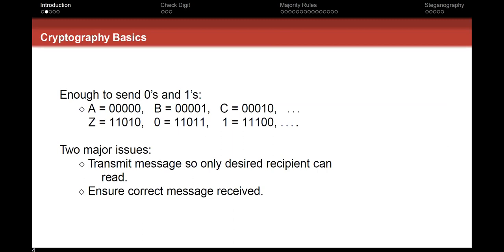Just a couple of basics in coding theory. Imagine we're using five bits to represent numbers — we can get all 26 letters from A to Z with a little extra since we have 32. You could do six bits for more symbols, but you'd be spending more information on most letters. If we can just send zeros and ones, we can send any message. The goal is to transmit messages so that only the desired recipient can read it and receives the correct message.